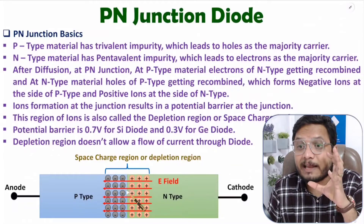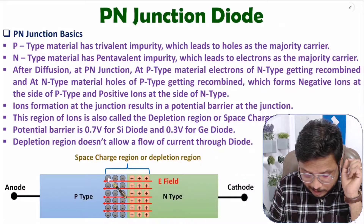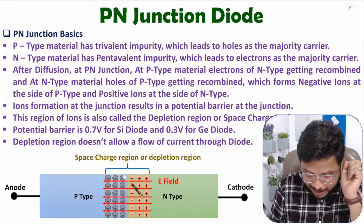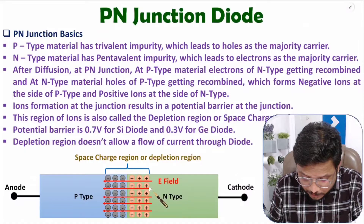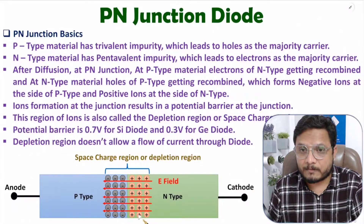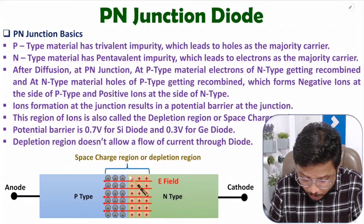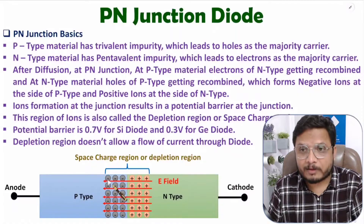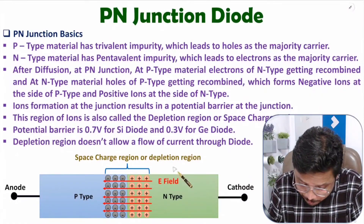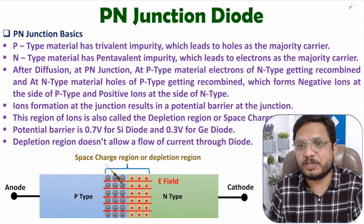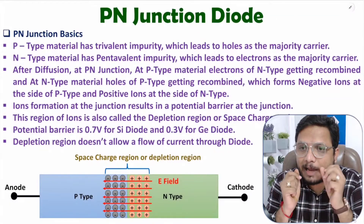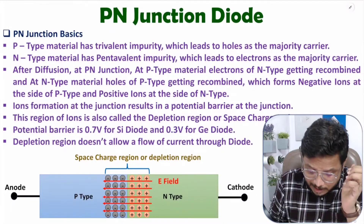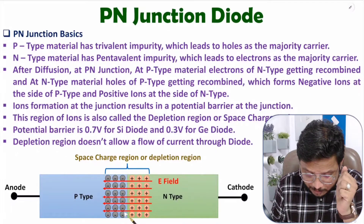Holes and electrons are getting recombined with each other. At the side of P-type, electrons are getting diffused with holes, and at the side of N-type, holes are getting diffused with electrons. At the side of P-type, as electrons are getting diffused, there is a formation of negative ions. At the side of N-type, holes are getting diffused, so there is a formation of positive ions. This region of ions is the depletion region, also called the space charge region.